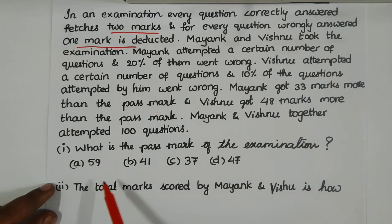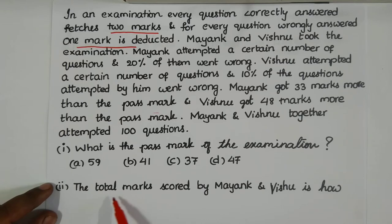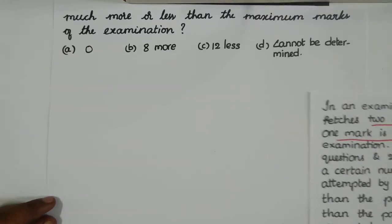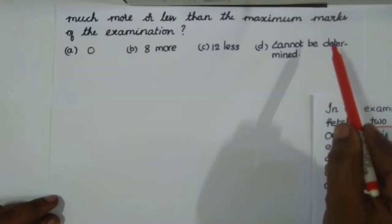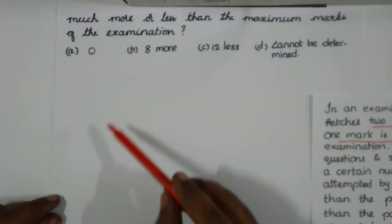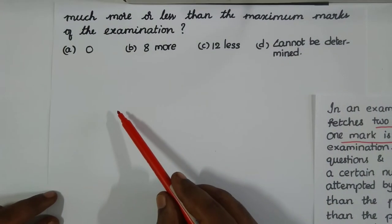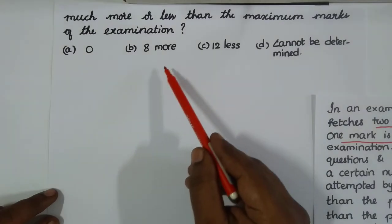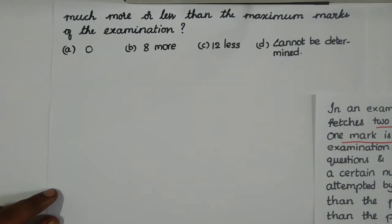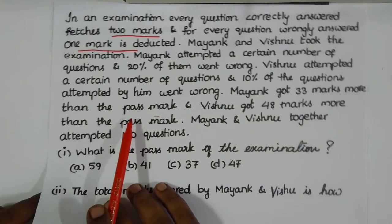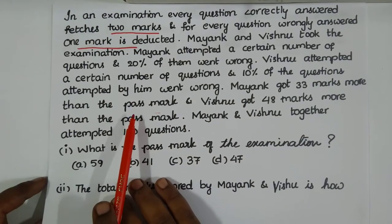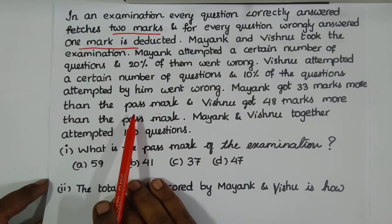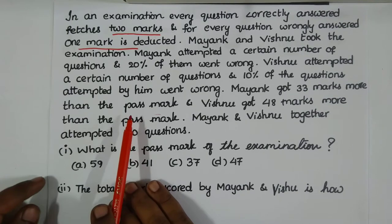Mayank and Vishnu together attempted 100 questions. Question 1: What is the pass mark of the examination? Question 2: The total marks scored by Mayank and Vishnu is how much more or less than the maximum marks of the examination? Options are: 0, 8 more, 12 less, or cannot be determined.